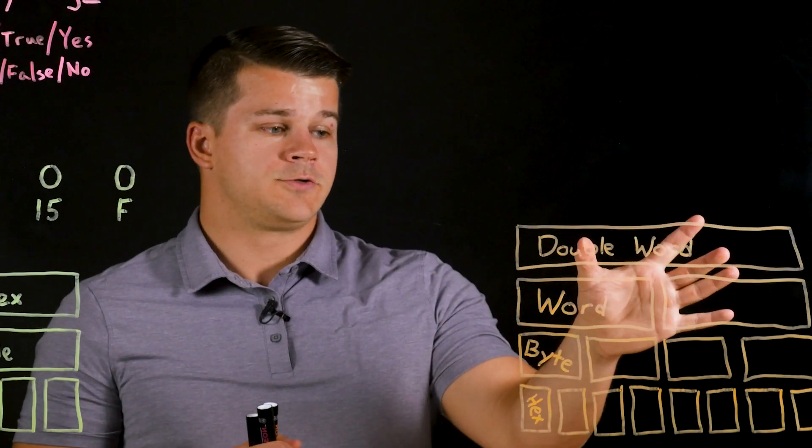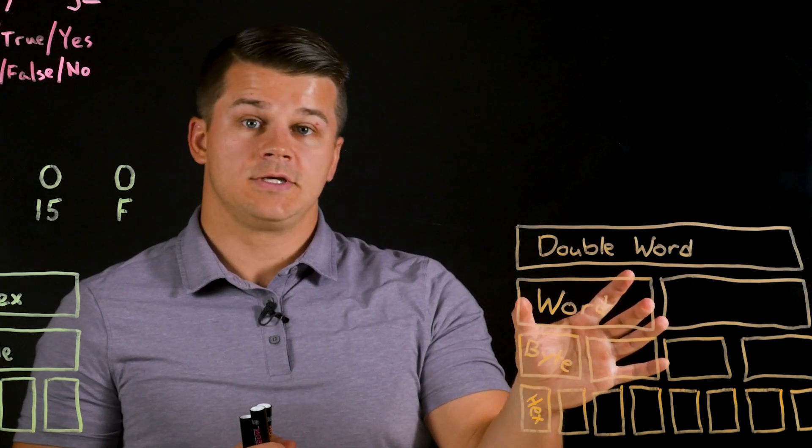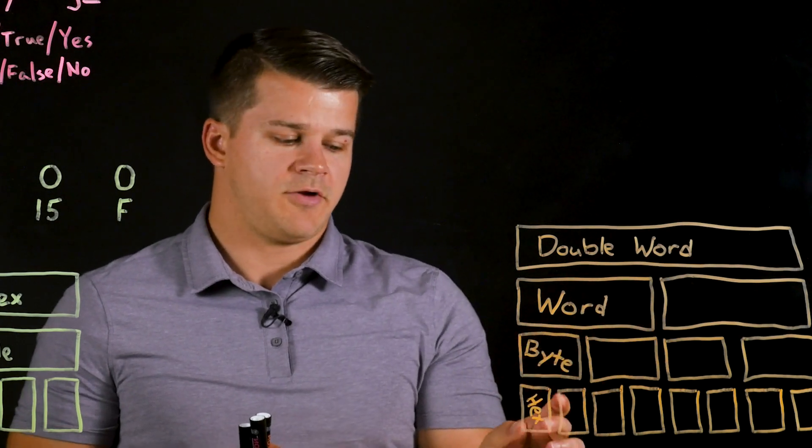So finally we have 32 bits each, 16 bits each, 8 bits each, and 4 bits each.